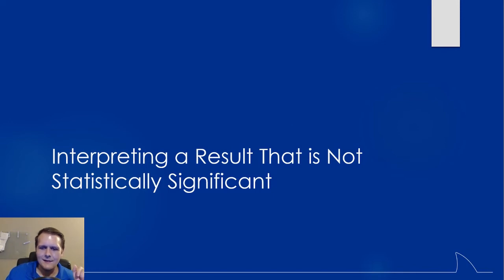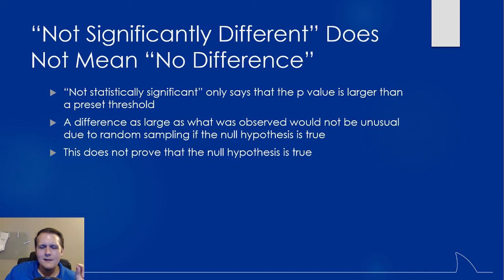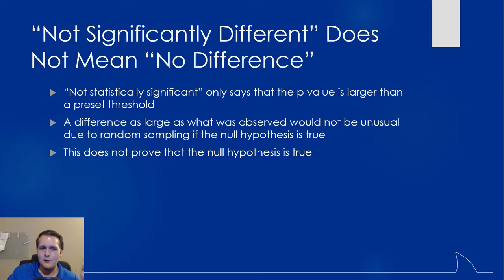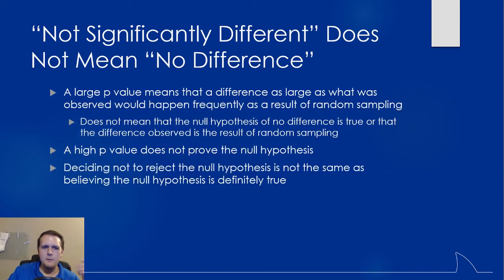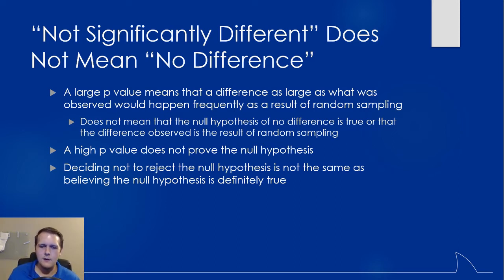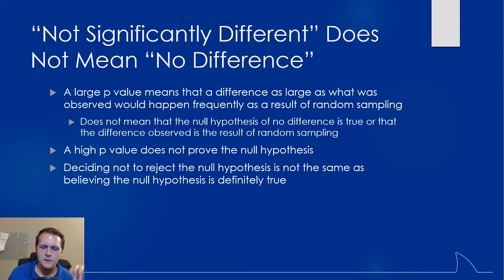How about interpreting a result that is not statistically significant? Not statistically significant does not mean no difference — it basically means you were unable to show a difference that allowed you to reject the null hypothesis. Remember you can make a type 2 error and not reject the null hypothesis when there really was a difference. When you have a large p-value, it means the difference as large as what you were expecting was probably more likely than not due to random sampling. It doesn't mean there's no difference — it just means you were unable to find it. A high p-value does not prove the null hypothesis is true. It just means you could not reject it.